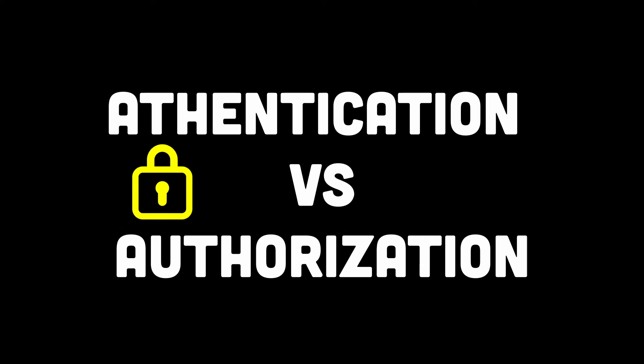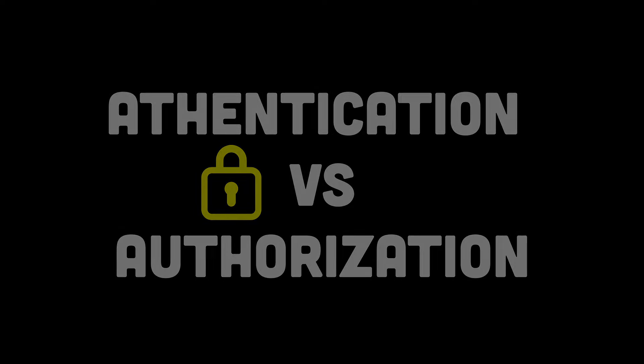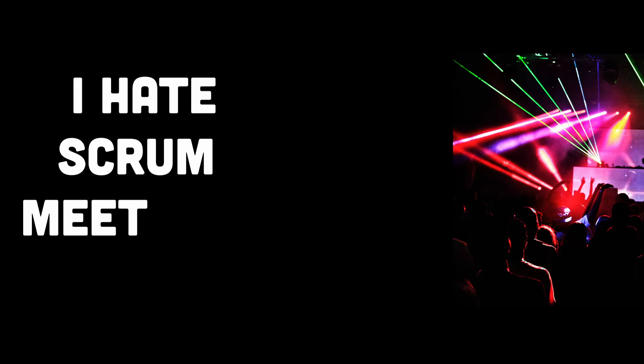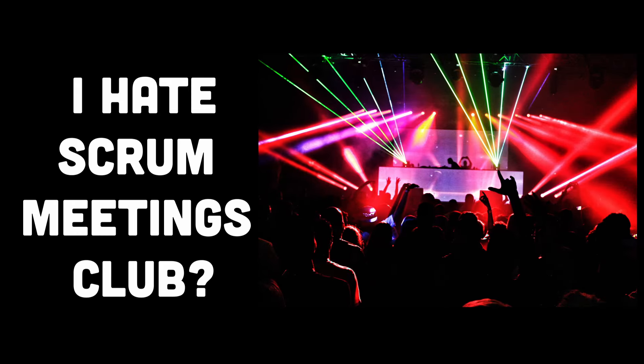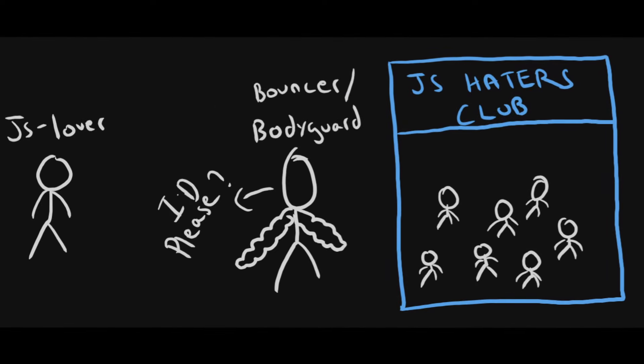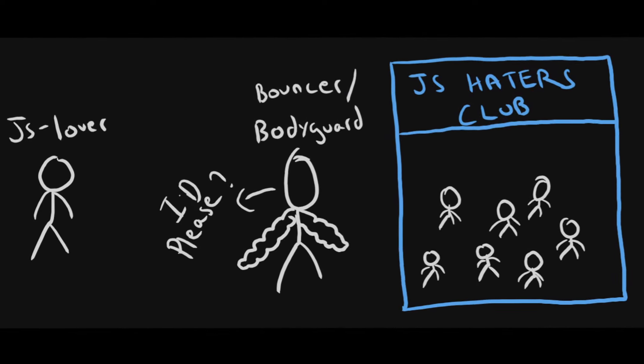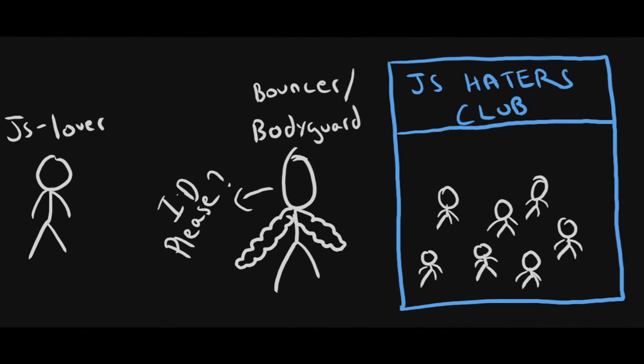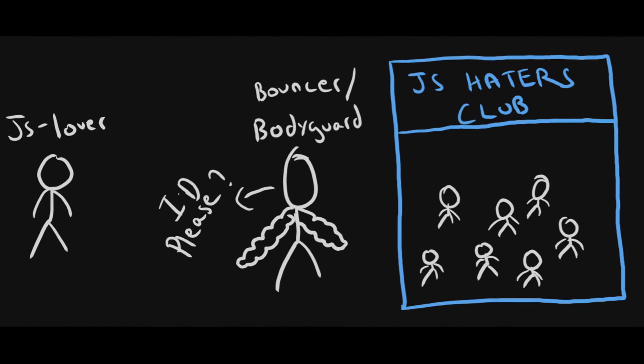Let's understand authentication with a cool example. Imagine you have a secret club and you want to make sure only members can enter. To do that, you need a way to verify who they are. That's what authentication does in the backend.